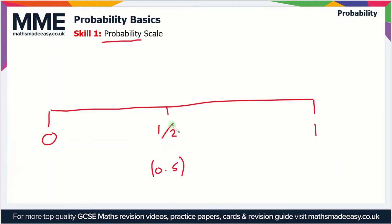We can say that anything beyond this point is likely to happen, so that's this region between a half and one. Anything lower than this value, between zero and a half, is unlikely to happen.